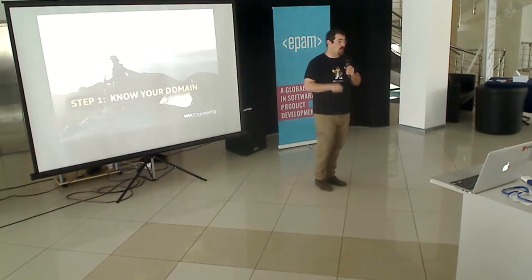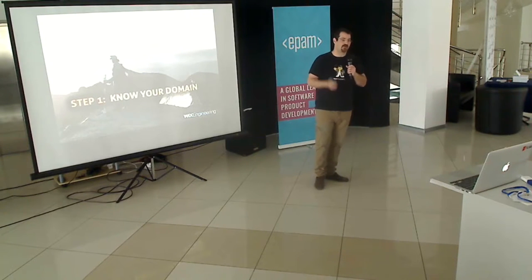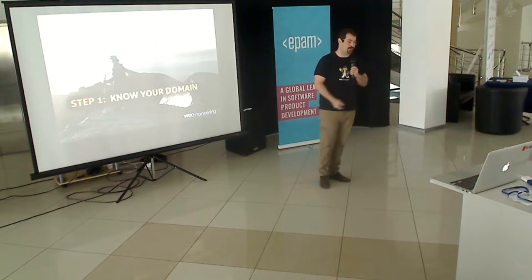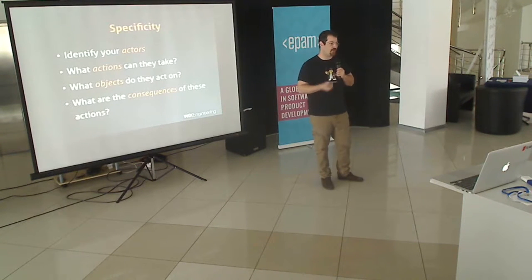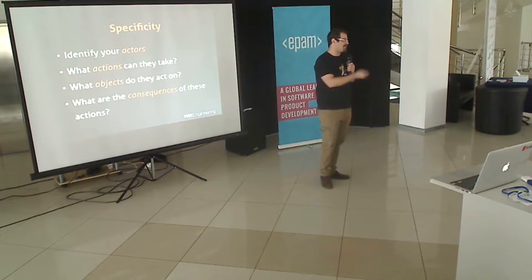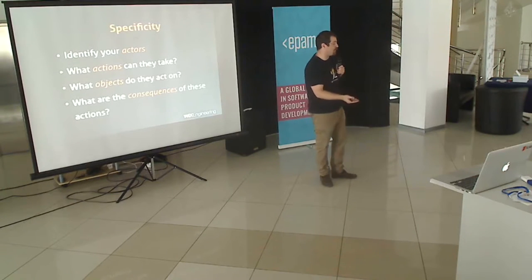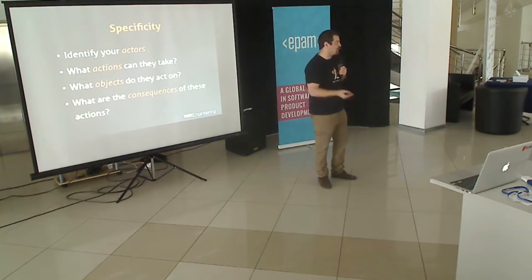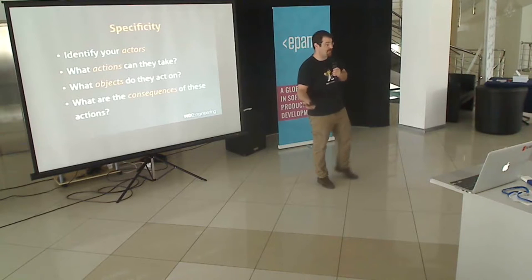When you're designing a domain-specific language in Scala, really in any case, the first thing you need to do is know your domain — you need to figure out what it is you're trying to achieve. The first thing you need to figure out is what are the various actors at play. You're building a language, you're describing something. What are the things involved? What are the actors, and what actions do they take?